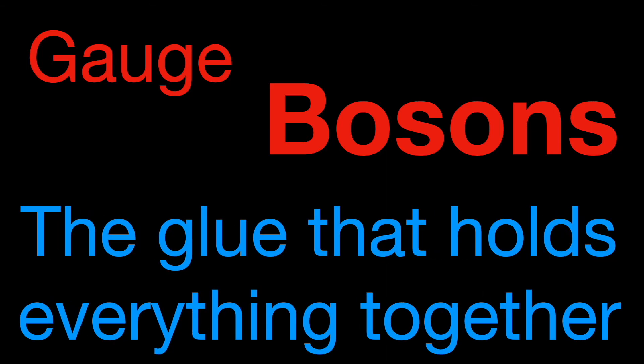The precise definition of a boson depends upon spin and includes things which we think of as particles, things like mesons, even atoms—those atoms with an even number of protons and neutrons.